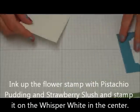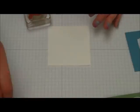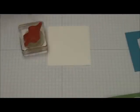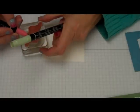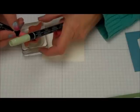Then we're going to take our three and a quarter by three and a quarter whisper white and we're just going to color the flower here with the strawberry slush and the pistachio pudding.